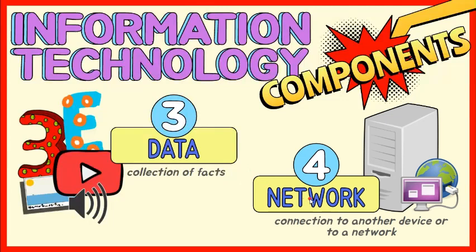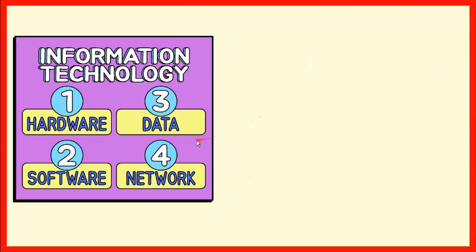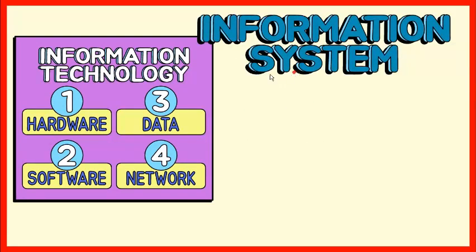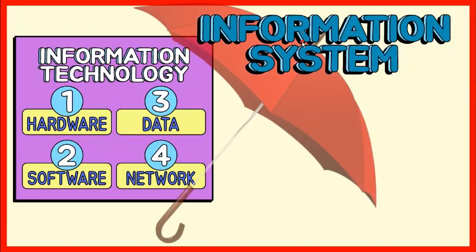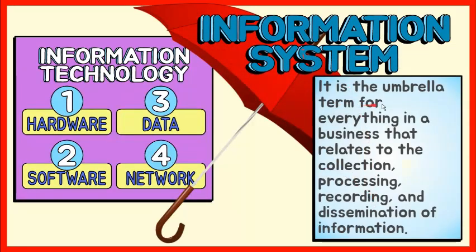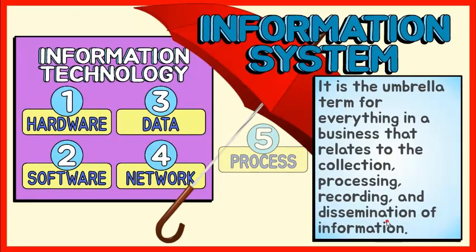In today's connected world, it is extremely rare that a computer does not connect to another device or to a network. These components of information technology are all present in any information system. Therefore, we can say that information technology is a subset of information system. Information system has become the umbrella term for everything in a business that relates to the collection, processing, recording, and dissemination of information within an organization, including pencil and paper. Aside from the technological components, information system also includes processes and people.